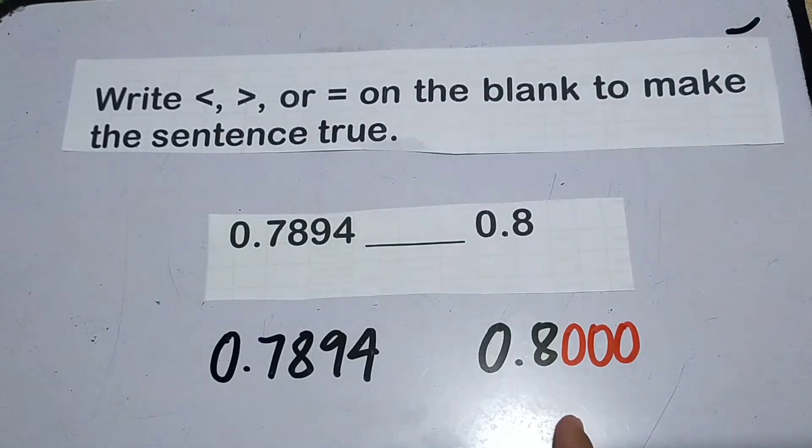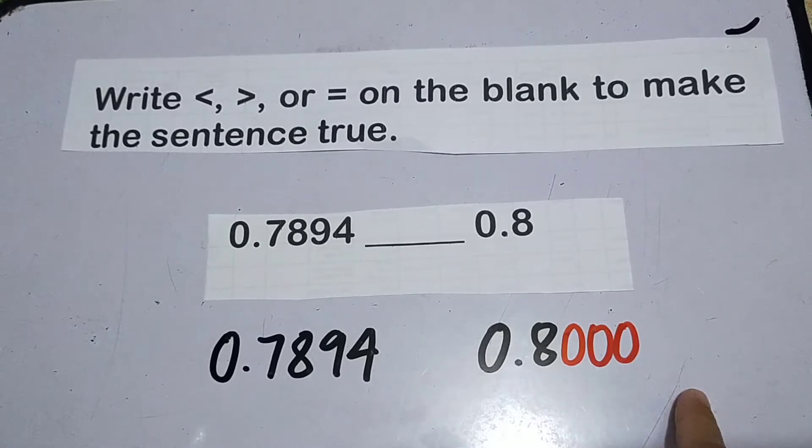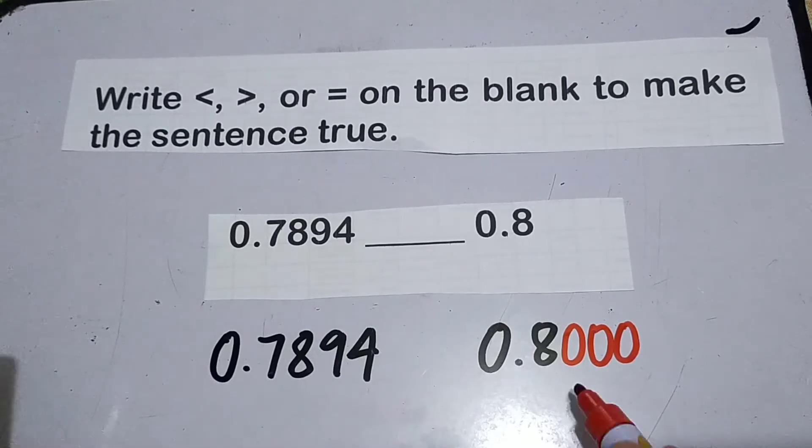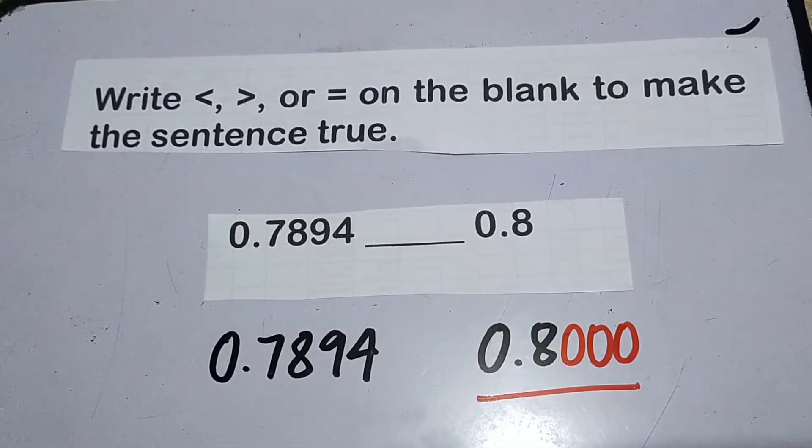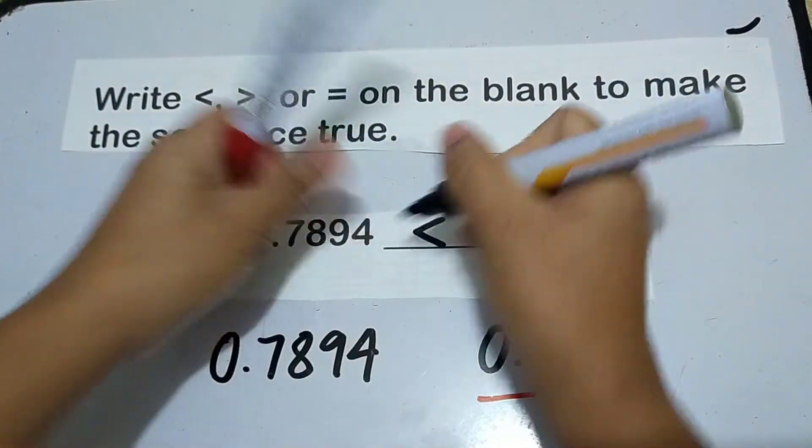So pag binasa na natin siya yung 8 tenths kanina, pag nilagyan ng apat na digits, magiging 8 thousand ten thousandths. Ito naman, 7,894 ten thousandths. So that means ito yung mas malaki. Then the answer is less than.